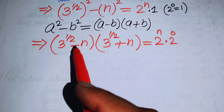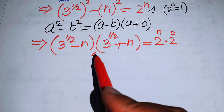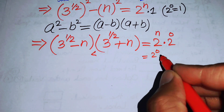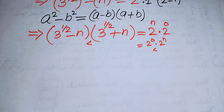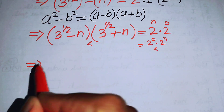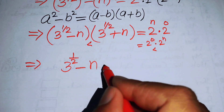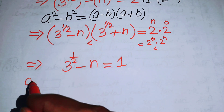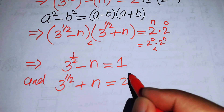The factor (3^(1/2) minus n) is the smaller value, and (3^(1/2) plus n) is the larger value. Similarly, 2^0 is less than 2^n. So we equate the smaller values with each other and the greater values with each other: 3^(1/2) minus n equals 2^0, which is 1, and 3^(1/2) plus n equals 2^n.